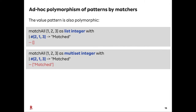Ad hoc polymorphism of patterns applies not only to constructor patterns but also to value patterns. Here we pattern match a list [1, 2, 3] with a value pattern [2, 1, 3]. If we use a list matcher, the pattern match fails because the order of elements differs. If we use a multiset matcher, the pattern matching succeeds, because the multiset matcher does not care about the order of elements.